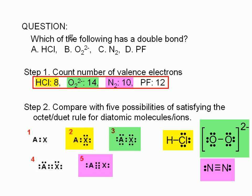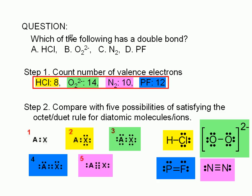We can see that only structure four has 12 valence electrons. Therefore, we expect the phosphorus fluoride molecule to have this structure. There's a double bond between the two atoms and two lone pairs on each atom.